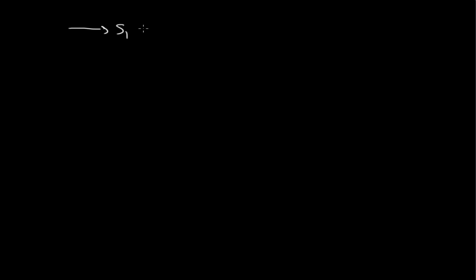I want to continue looking at stoichiometric networks and how you write out the differential equations, but from a slightly different angle. Consider the following really simple network. I'm going to have a very simple linear chain — one, two, three, four reactions in three species.